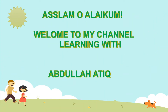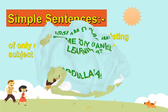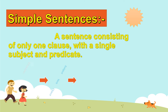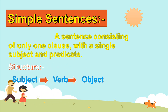Assalamu alaikum. Welcome to my channel Learning with Abdullah Atik. Aaj am parenke types of sentence — ka pahala is a simple sentence. Simple sentences, yani sadha jumla — a sentence consisting of only one clause with a single subject and predicate structure: subject, verb, object.